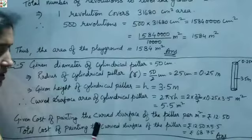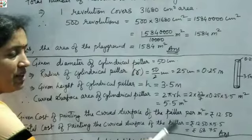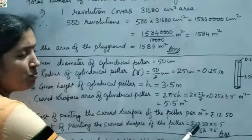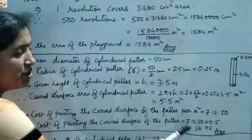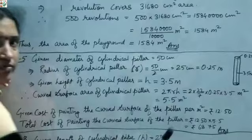The cost of painting the curved surface area is rupees 12.50 per m². Total cost = 12.50 × 5.5 = rupees 68.75. So the cost of painting the cylindrical pillar is rupees 68.75.